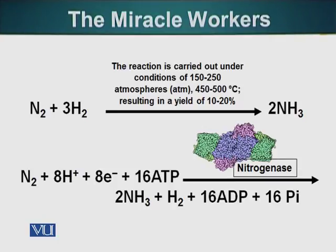Let's look at the conditions that are required to conduct this reaction. This reaction requires 500 degrees Celsius temperature and a pressure of 150 to 250 atmospheres. That's a huge amount of pressure, a huge amount of energy required to simply form ammonia from atmospheric nitrogen reacting with hydrogen.